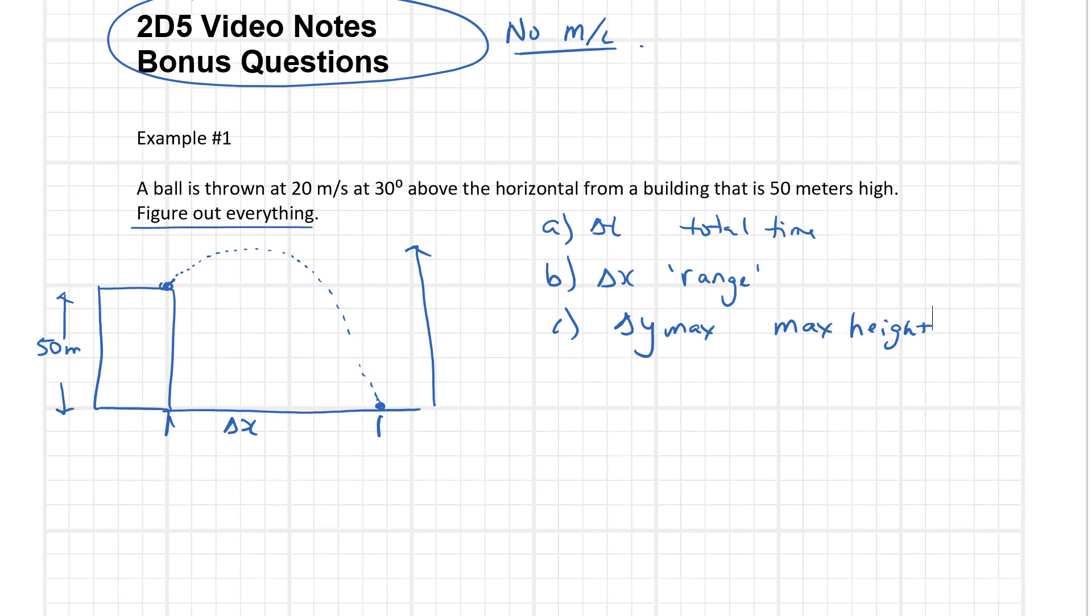Let's consider our directions. I'm going to say that x is going to be positive in this direction. I'll make up positive for y, so down is going to be negative.